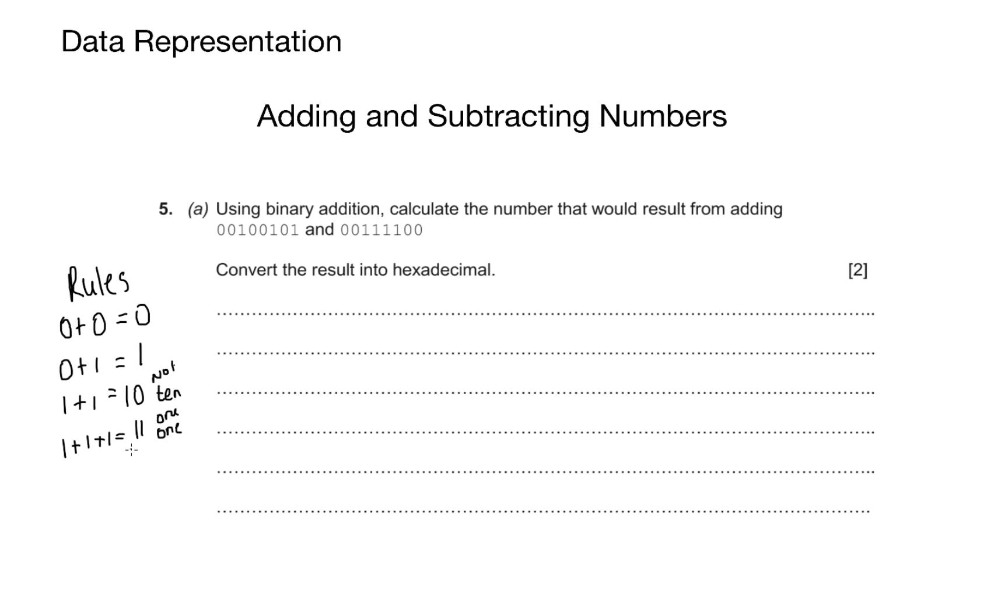This question asks us, using binary addition, calculate the number that would result from adding 00100101 and 00111100. And it wants us to produce the result in hexadecimal notation. So where do we begin? I begin by writing out both of the numbers with the first set of numbers above the next set of numbers. It's important that you align them here because if we make any mistake, we will lose a mark.